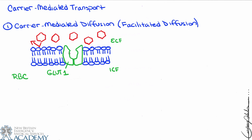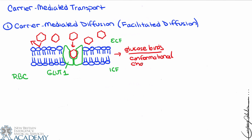Glucose is actually a little bit too big for a channel, so channel-mediated diffusion is not an option here either because it's simply too large to fit through an ion channel. That leaves us with this carrier protein that's going to bind the glucose. The glucose is floating around in the ECF in high concentrations — that's why we drew it on that side.